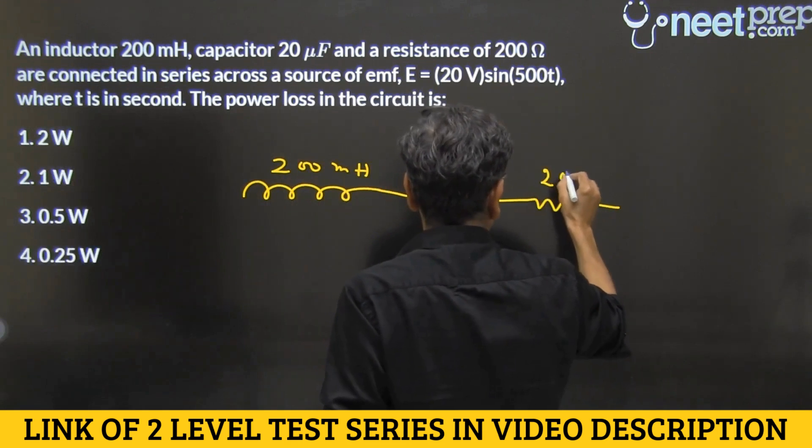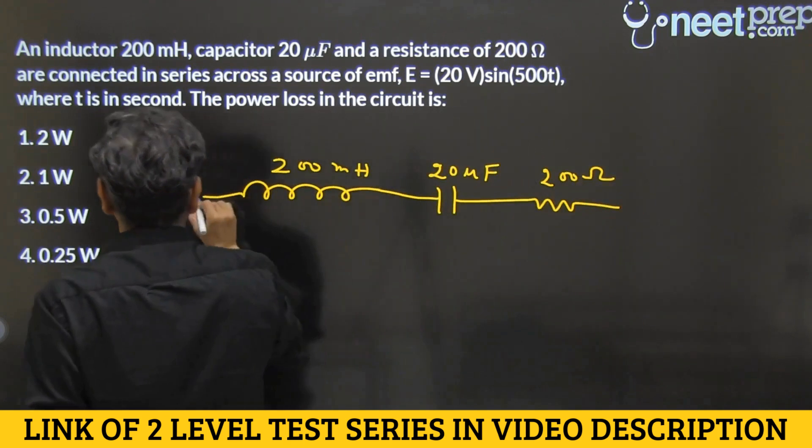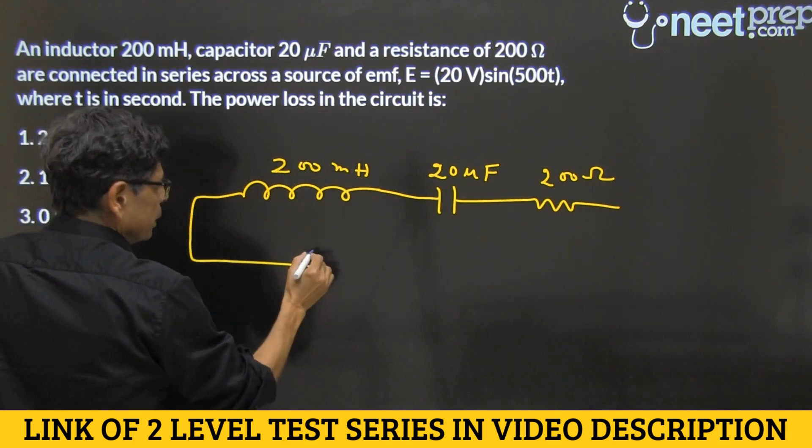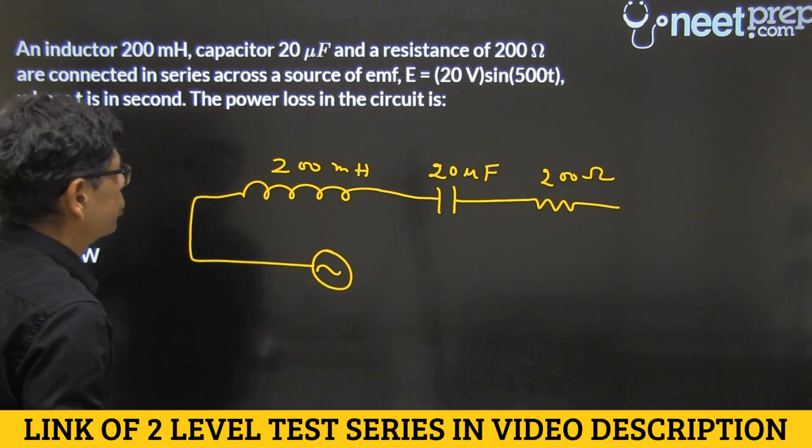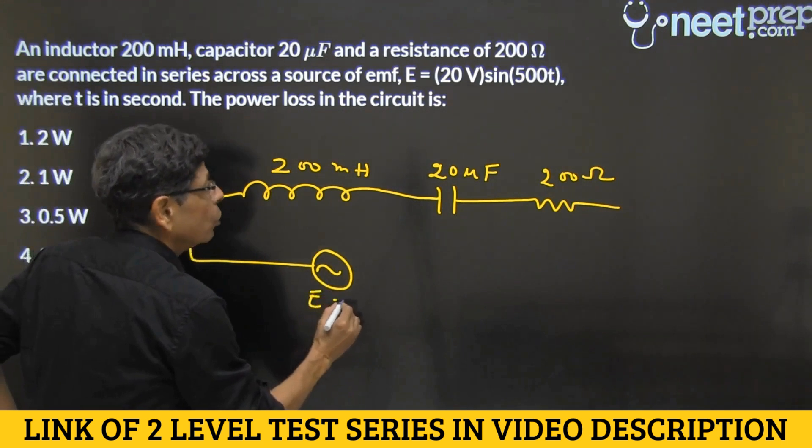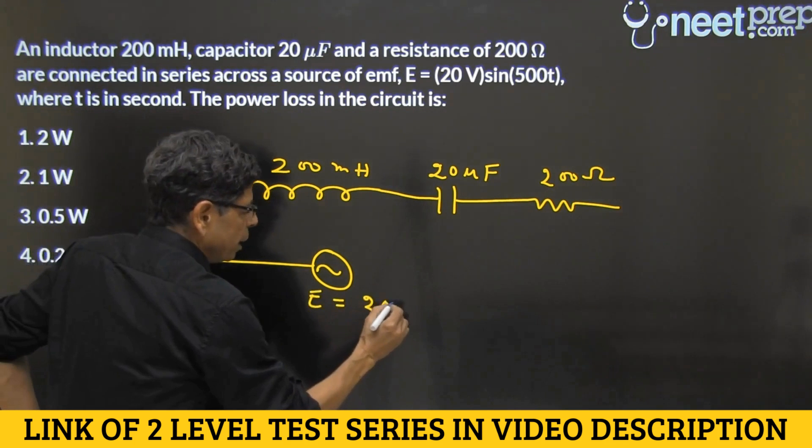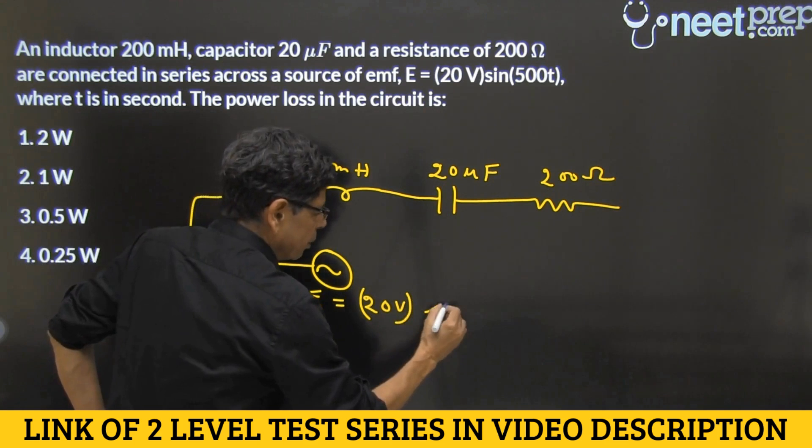so resistance of 200 ohms, right? And the thing is connected with the AC source, which is described by E is equal to 20 volts sin 500 T.